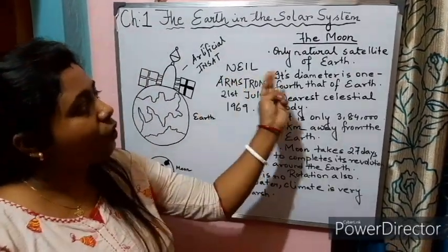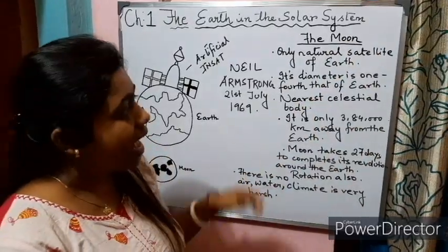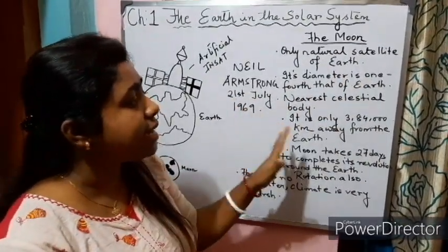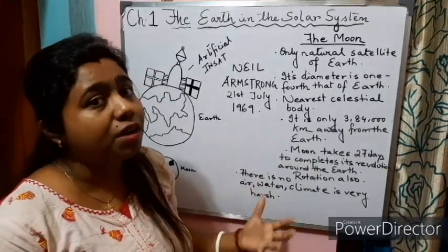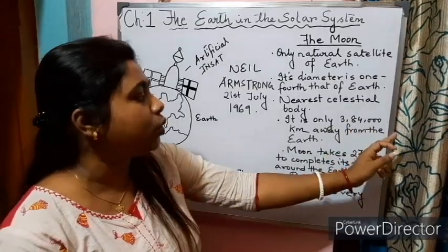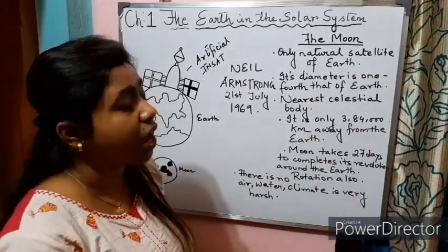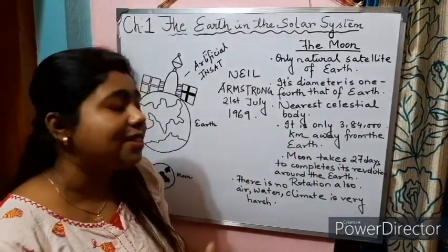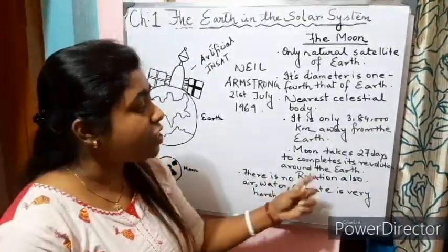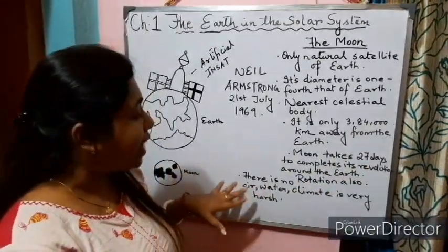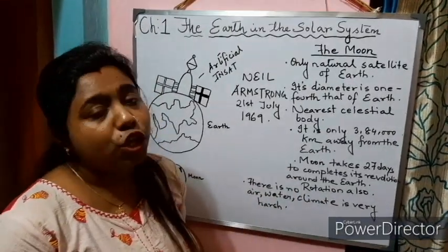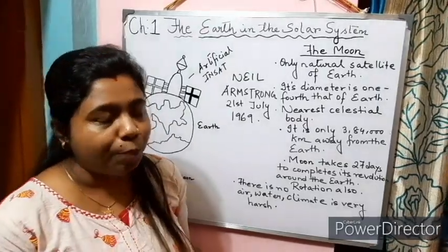To summarize what we learned about the Moon: the Moon is the only natural satellite of Earth. Its diameter is one-fourth that of Earth. It is the nearest celestial body, only 384,000 kilometers away. It takes exactly 27 days to complete both its revolution and rotation. There is no air, no water, and the climate is very harsh, so human beings cannot live on the Moon.